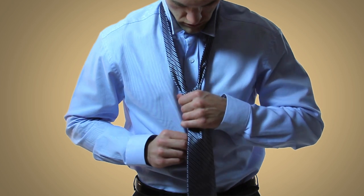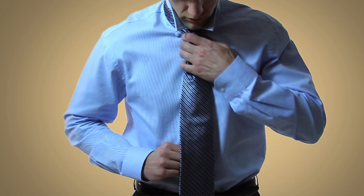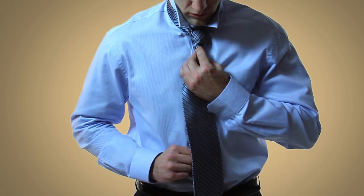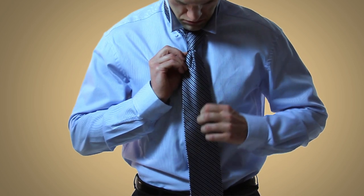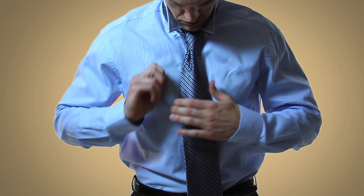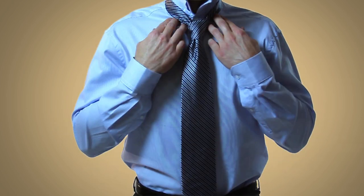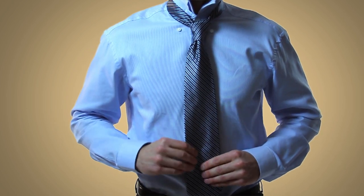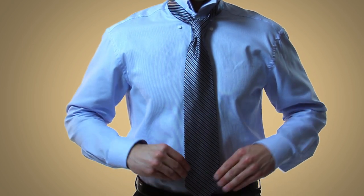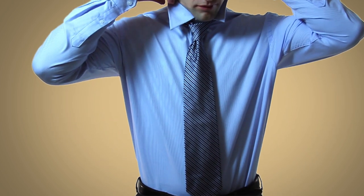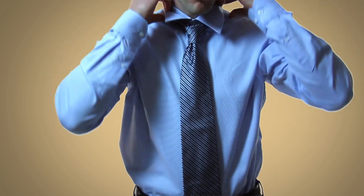After that you'll pull on the narrow end and cinch the knot up to your neck and then you can use your pointer finger to get the dimple how you want it and then make any other last minute adjustments to get the look that you're going for. Once you're satisfied with the length and the look you can flip your collar down. The tie should just reach the top of your belt.